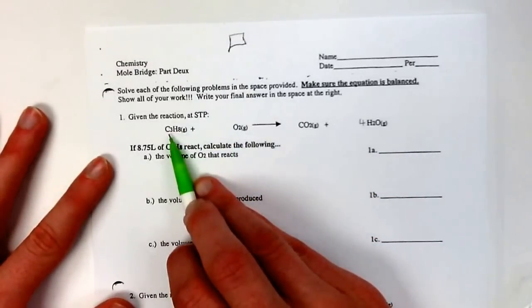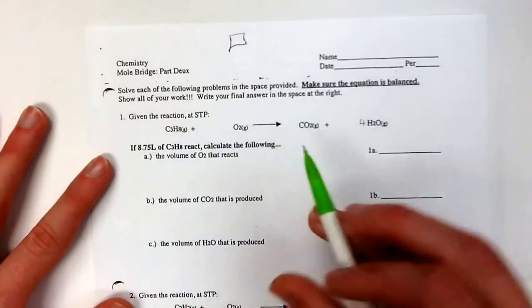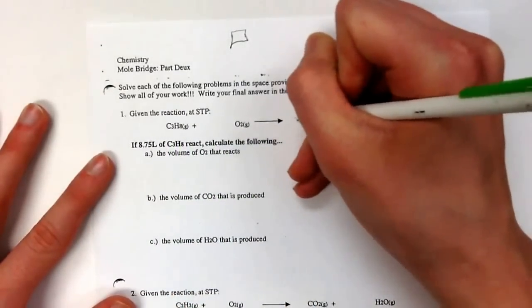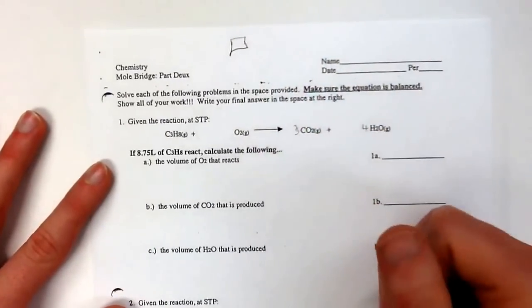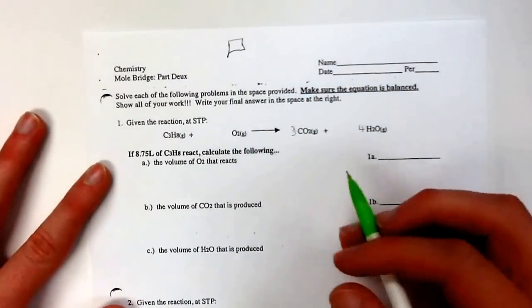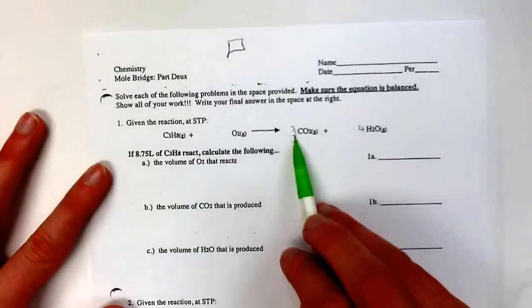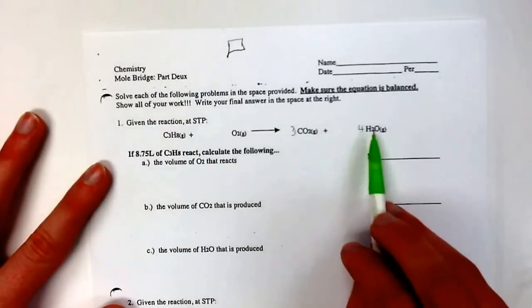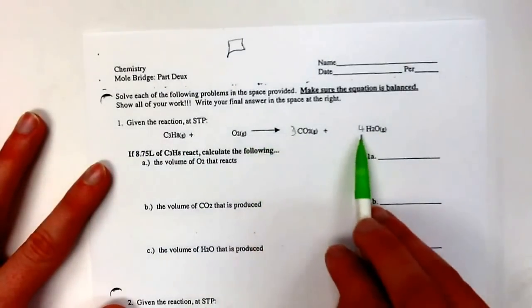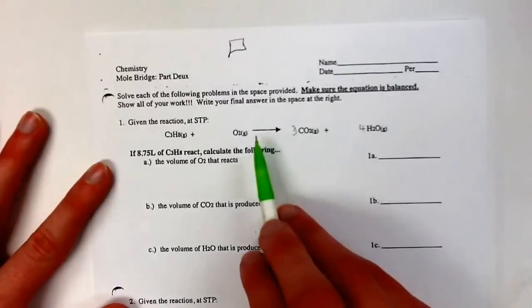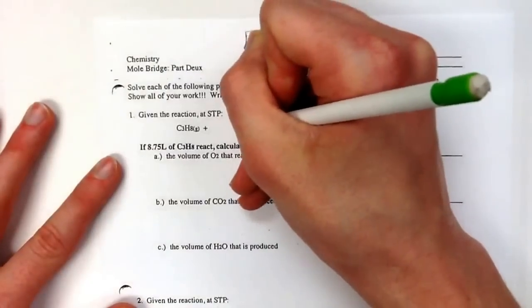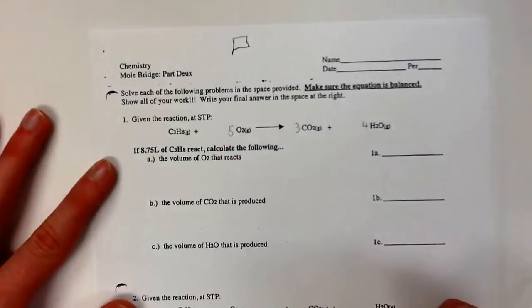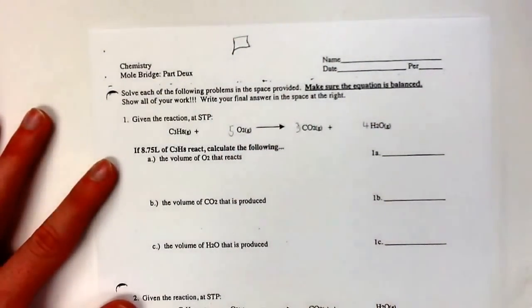Now we want to look at our carbons. Our carbons are three, we have only one over here, so I have to put a three right there. Now we can look at our oxygen. So I have a total of six right here. I have four plus four right here, bringing the total to ten. So now I have two oxygens right here, so I've got to put a five. And that is how you balance this equation.